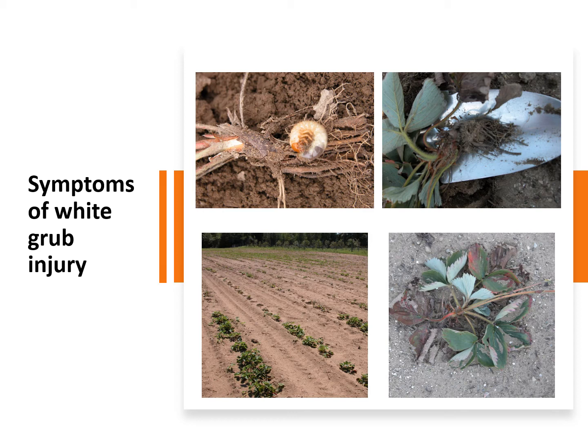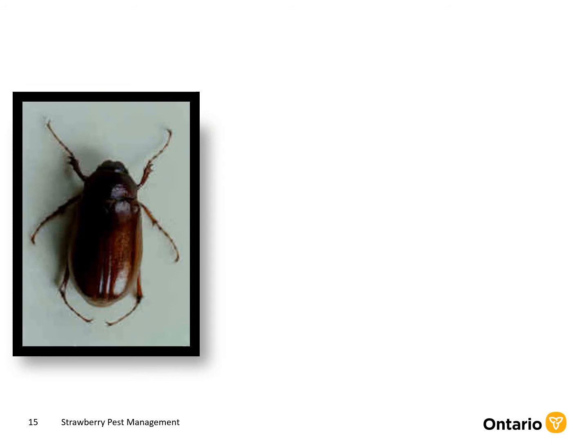Symptoms of white grub injury on strawberry plants include stunted growth and plant dieback. Roots can appear cut or sheared off a few centimeters below the crown. Injury usually occurs in the year of planting. Affected plants will suddenly wilt and die back, affected individually at first, then in groups in a row. On top of the damage larvae do to the roots, adult Japanese beetles may feed on strawberry foliage, causing a lacy, shredded effect. Damage is most common on lighter soil types when strawberries are grown after pasture or sod.